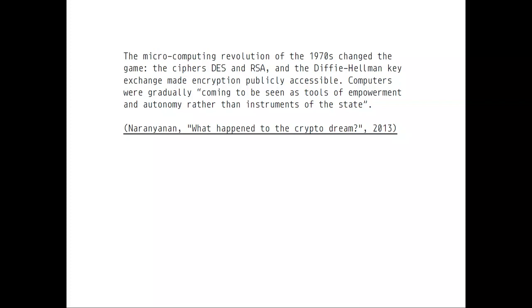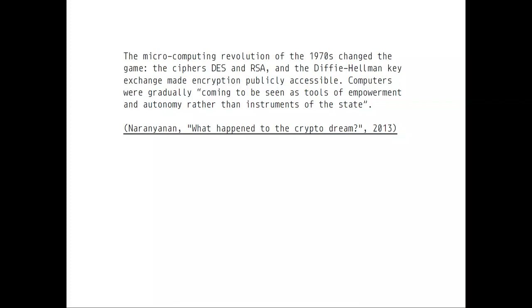You had the Cyphers, DES, RSA, and the Diffie-Hellman Key Exchange, which actually enabled this kind of crypto dream, as Arvin Naranjian calls it. Technologies become available, and in a way they get regulated. This also happened with the microcomputing revolution and the availability of cryptography, because we had the crypto wars of the 1990s. If you're interested, I wrote a chapter in a book called Faceless Praxis in the Age of Zero Trust: Strategies of Disappearance and Distributed Pseudonymity in Art and Research, which explains the cultural implications of microcomputing.